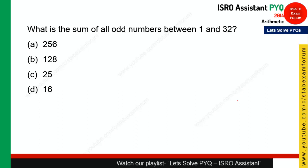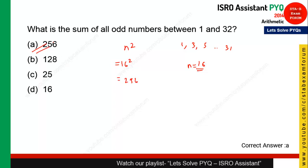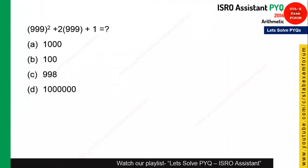The next question uses the formula: the sum of odd numbers in any range equals n², where n is the count of odd numbers. Counting odd numbers from 1 to 31 gives 16 numbers. So the sum = 16² = 256. Option A is the right answer.